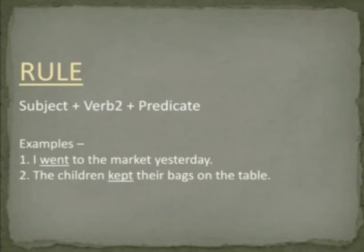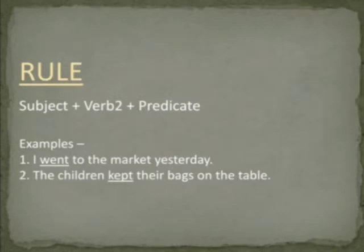First example: I went to the market yesterday. In this sentence, 'I' is the subject, 'went' is the second form of the verb, and 'to the market yesterday' is the predicate. Second example: The children kept their bags on the table. 'The children' is the subject, 'kept' is the second form of the verb, and 'their bags on the table' is the predicate.